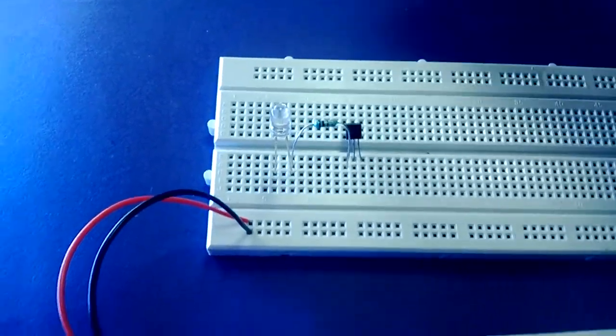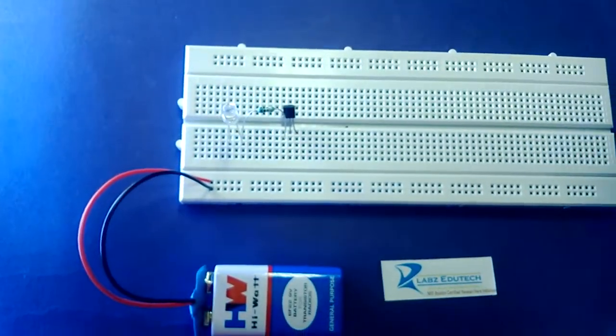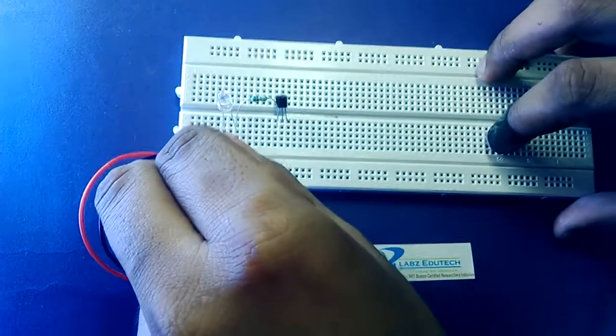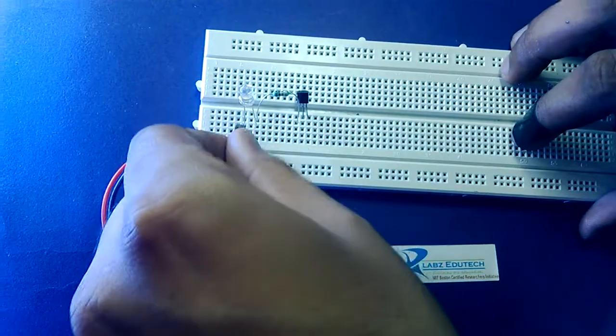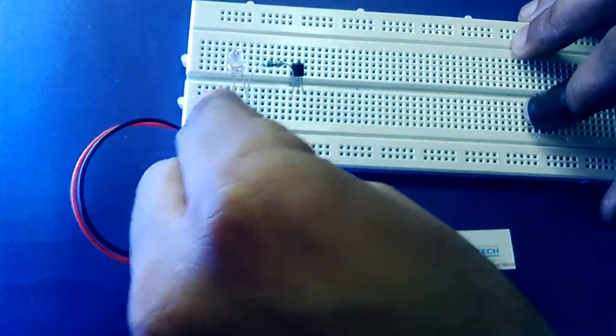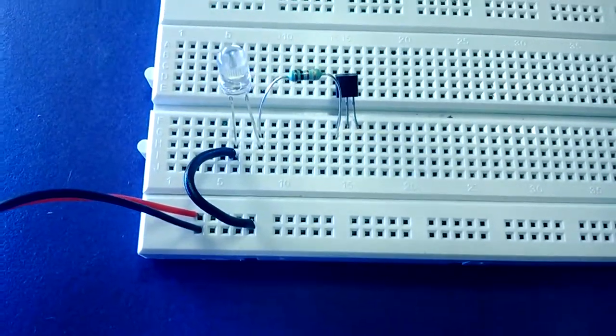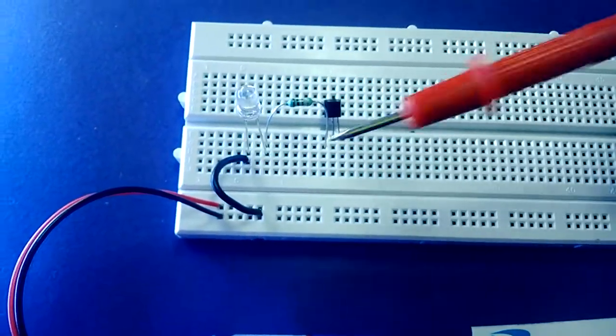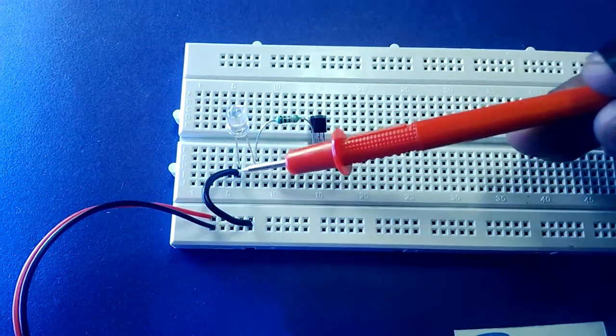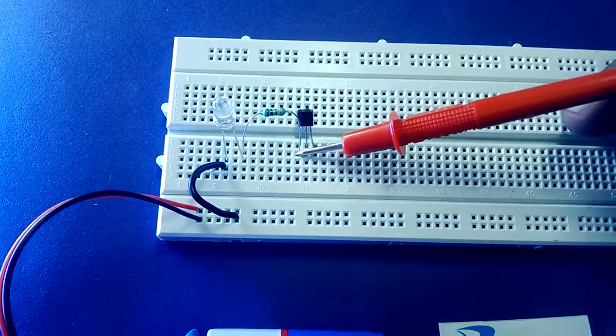Now moving ahead, I will put a connection with the positive leg of this LED to the 9 volt battery. This is how we connect. Now you can see the circuit has been connected. This is a wire which connects the positive terminal and this is the negative terminal which is connected with the collector terminal.